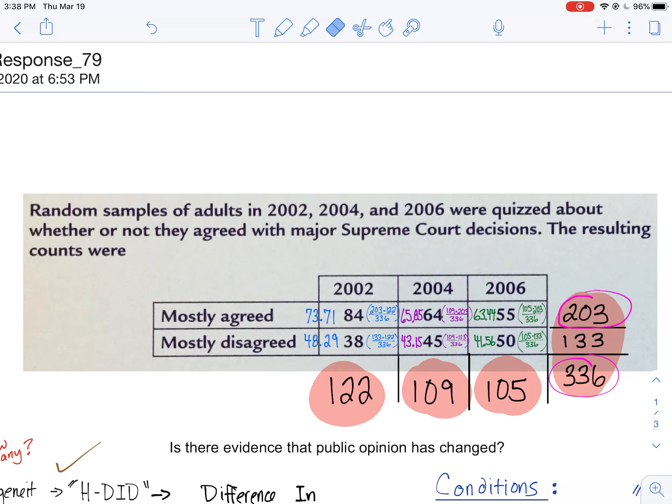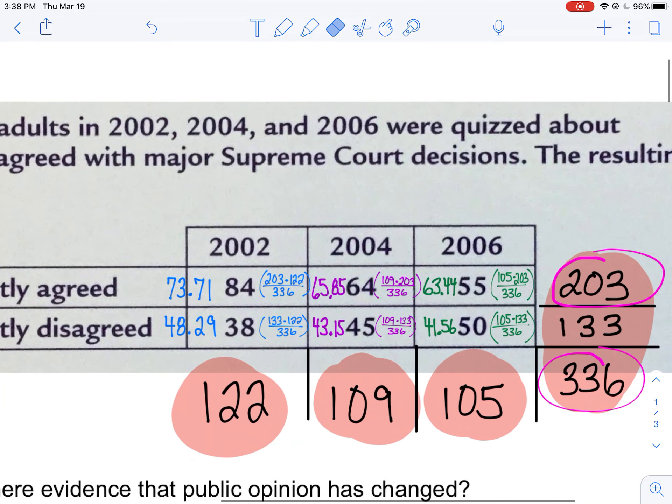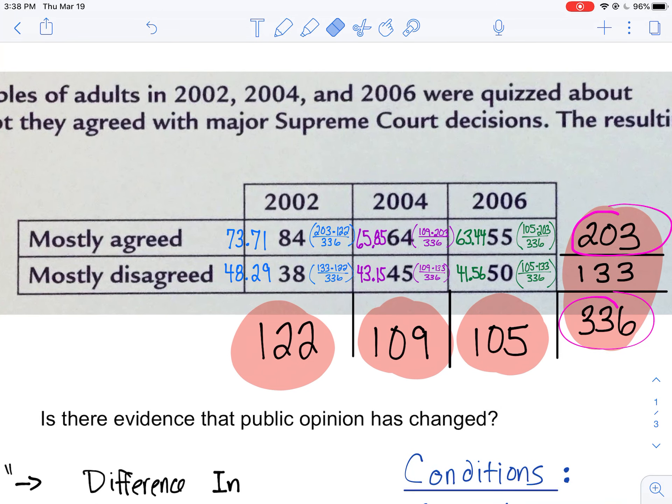The resulting counts were provided and I filled in the marginal distributions, all the totals for the columns and the rows. They weren't initially provided for us. You'll notice in a number of cases when you're doing a chi-square you'll have to deal with that.